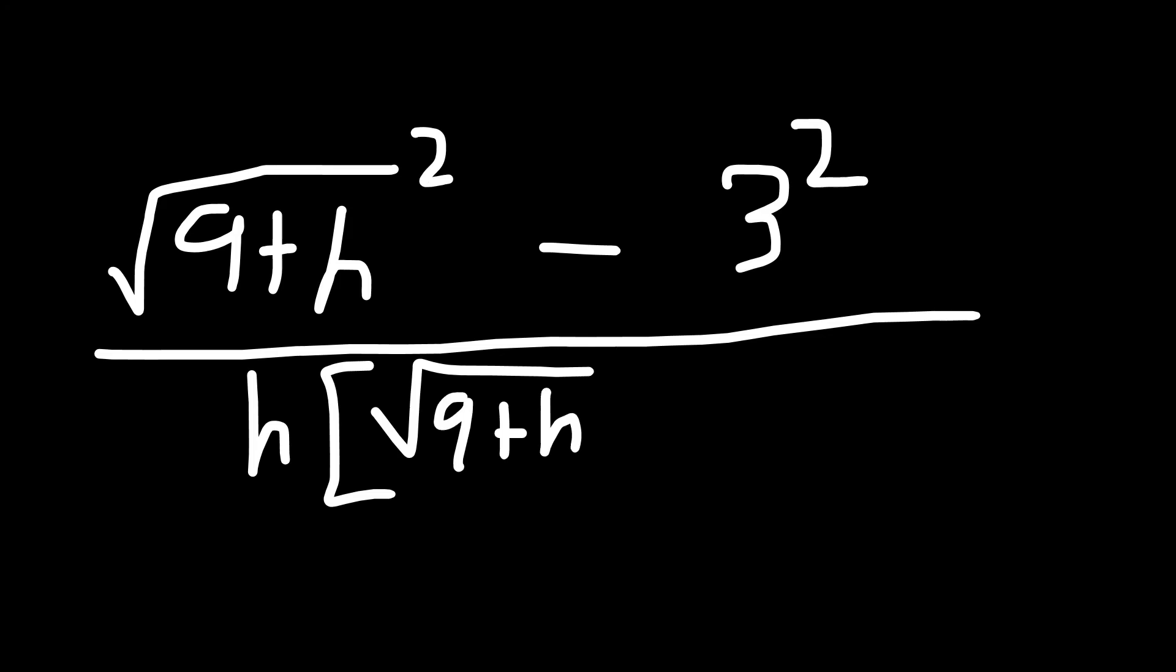You will have the root of 9 plus h squared minus 3 squared, and the bottom is going to be h multiplying that root of 9 plus h plus 3. The 2 and the root will cancel off because they're opposite operations.